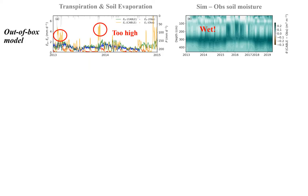Let's first look at the out-of-box simulation. On the left, the simulated transpiration shown in green lines matches the blue dot observations very well. But the soil evaporation simulation shown by the orange line is considerably higher than the observed red dots. And on the right, the simulated soil moisture is always wetter than the observations.